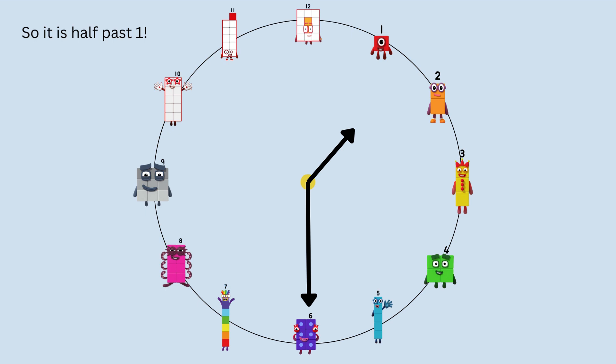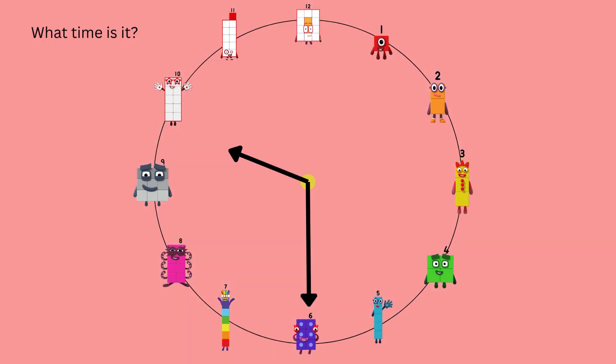Let's try another hard question. What time is it? Well, the big hand is at six. And the little hand is just after nine. So it is half past nine. Did you get that one? Well done.